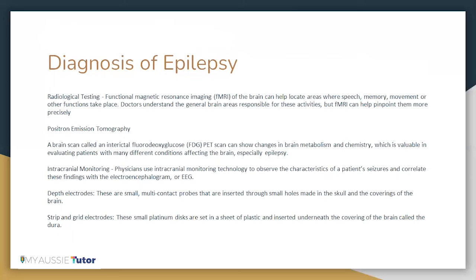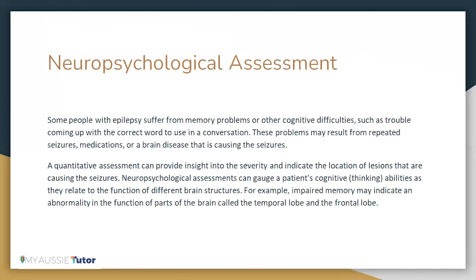Intracranial monitoring: physicians use intracranial monitoring technology to observe the characteristics of a patient's seizures and correlate these findings with the EEG findings. Depth electrodes are small multi-contact probes that are inserted through small holes made in the skull and the coverings of the brain. Strip and grid electrodes are small platinum discs set in a sheet of plastic and inserted underneath the covering of the brain called the dura. Neuropsychological assessment is also another diagnostic method. Some people with epilepsy suffer from memory problems or other cognitive difficulties, such as trouble coming up with the correct word to use in a conversation.